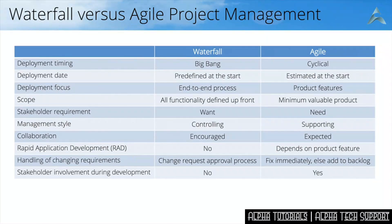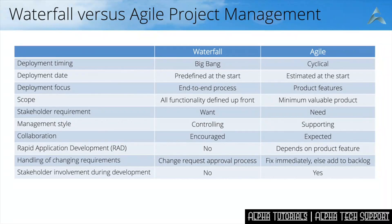An interesting feature of Waterfall is that the stakeholder — the business representative who defines all the business requirements — will have to define all of them upfront, and then that is handed over to the team that is going to build the product. Only at the far end of the process will they get the opportunity to see whether what they are going to get is what they are also expecting. Whereas with Agile, as you do cycles, at the end of each cycle whatever has been built needs to be demonstrated back to the stakeholder, giving the stakeholder an opportunity to provide feedback during the development process.